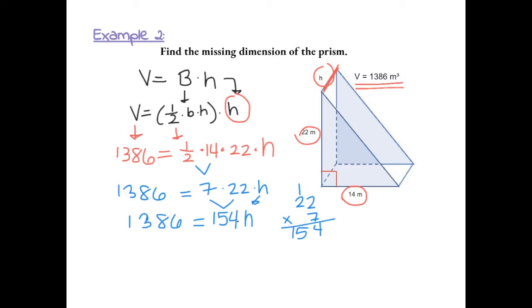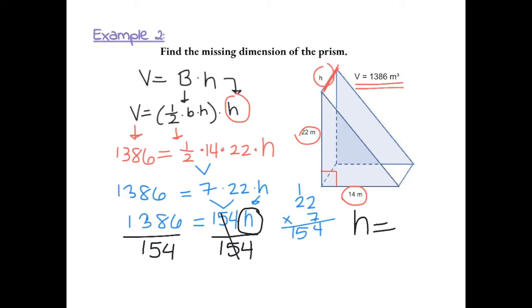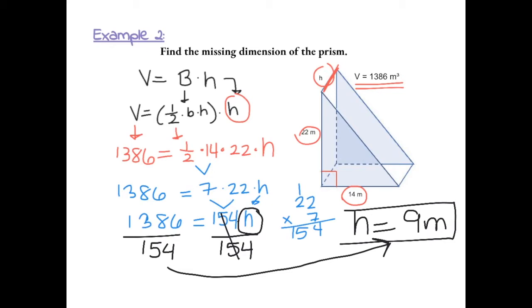We have 154H, and we want to know what H is, so we need to get it by itself. Using inverse operations, we divide both sides by 154. Those cancel out, and H equals 1386 divided by 154, which equals 9. Because this is a missing dimension, the units are meters, so the missing dimension is 9 meters.